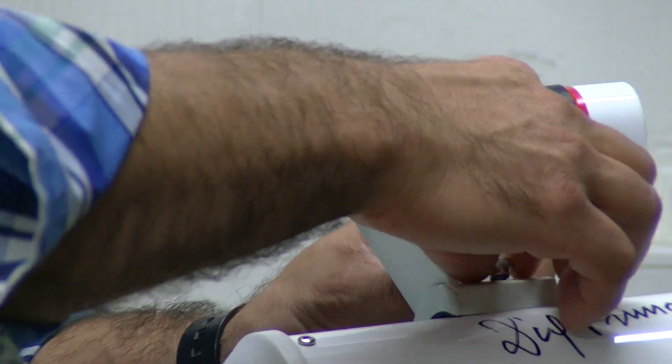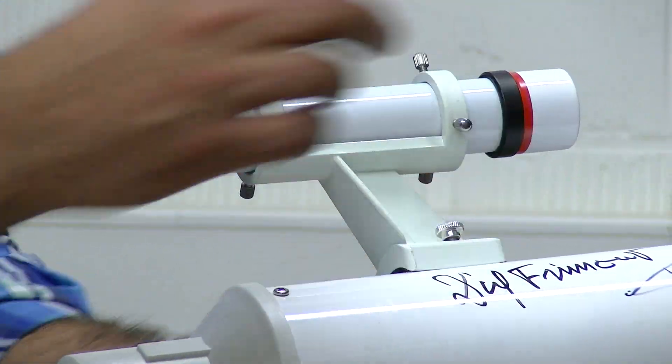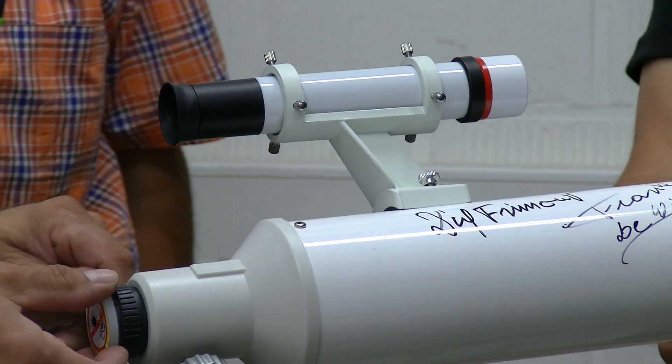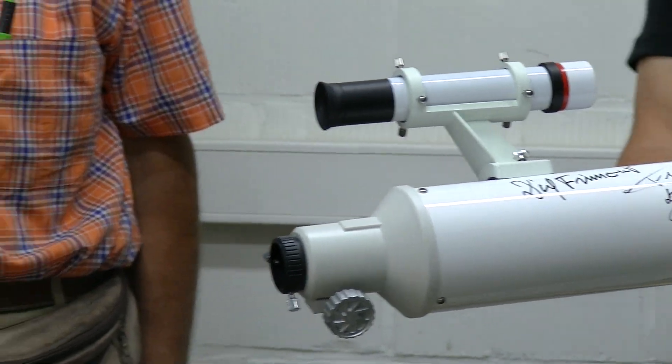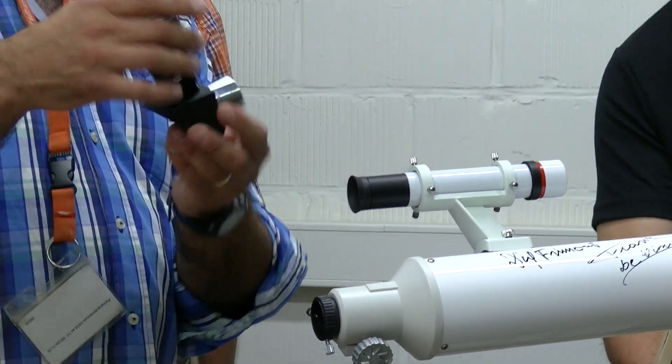So the telescope is now ready for use. One part missing. At the back, you will need to insert the 90 degree angled bracket with the eyepiece.